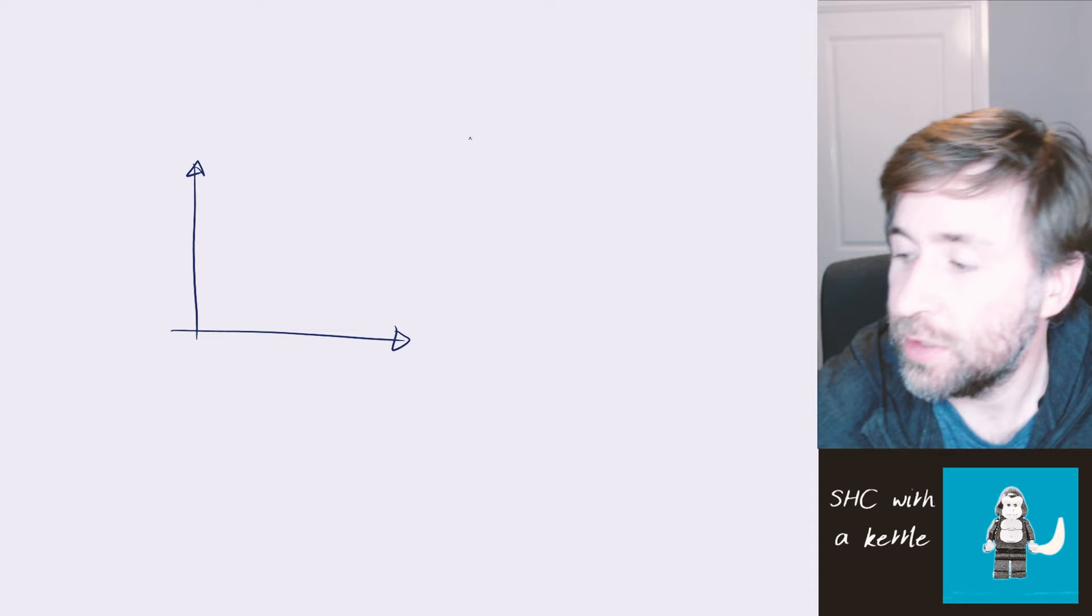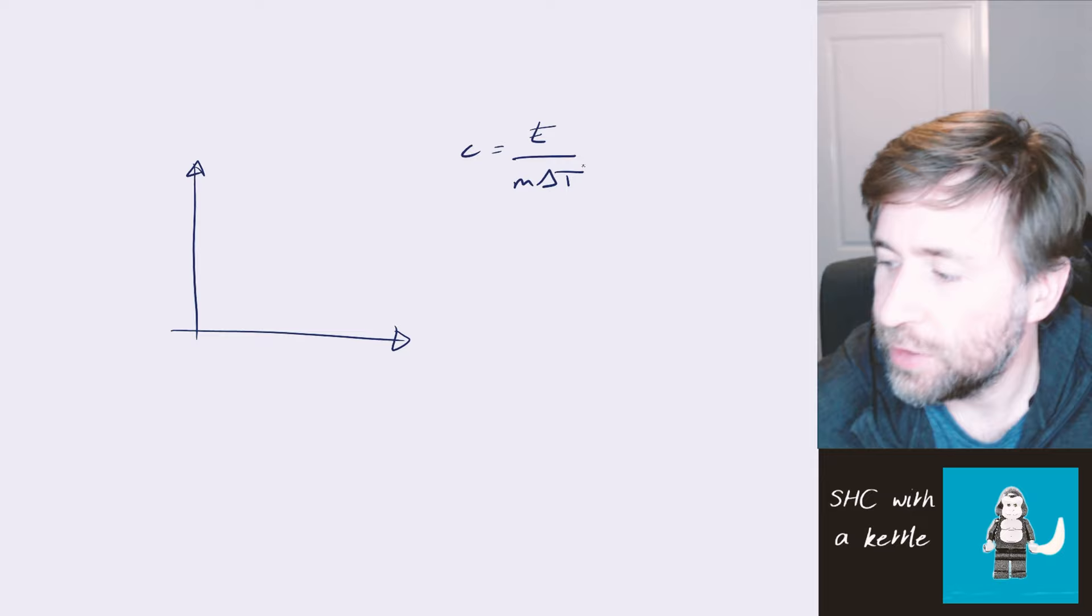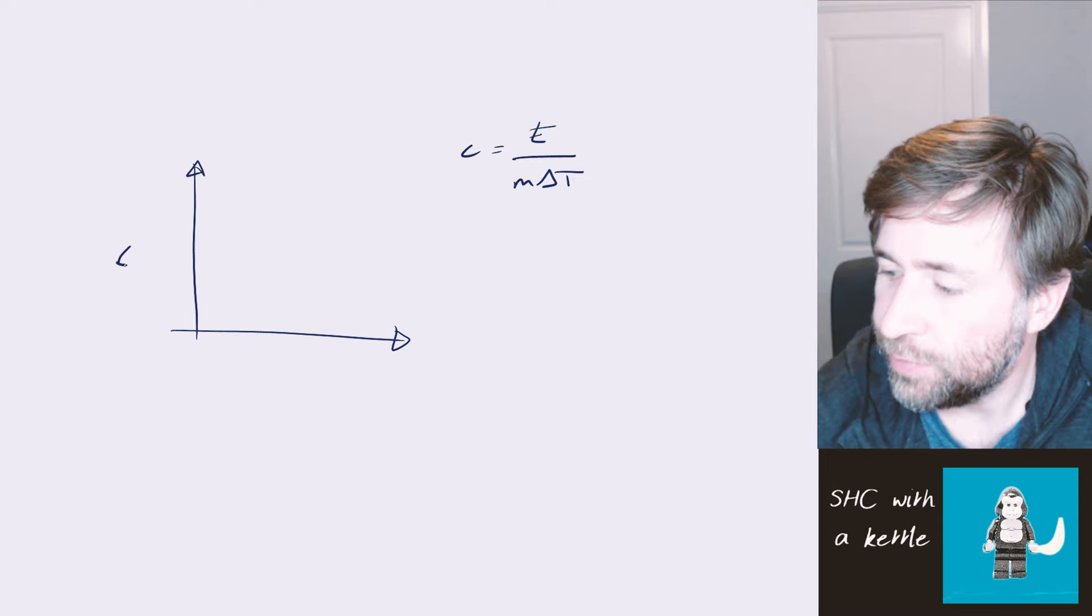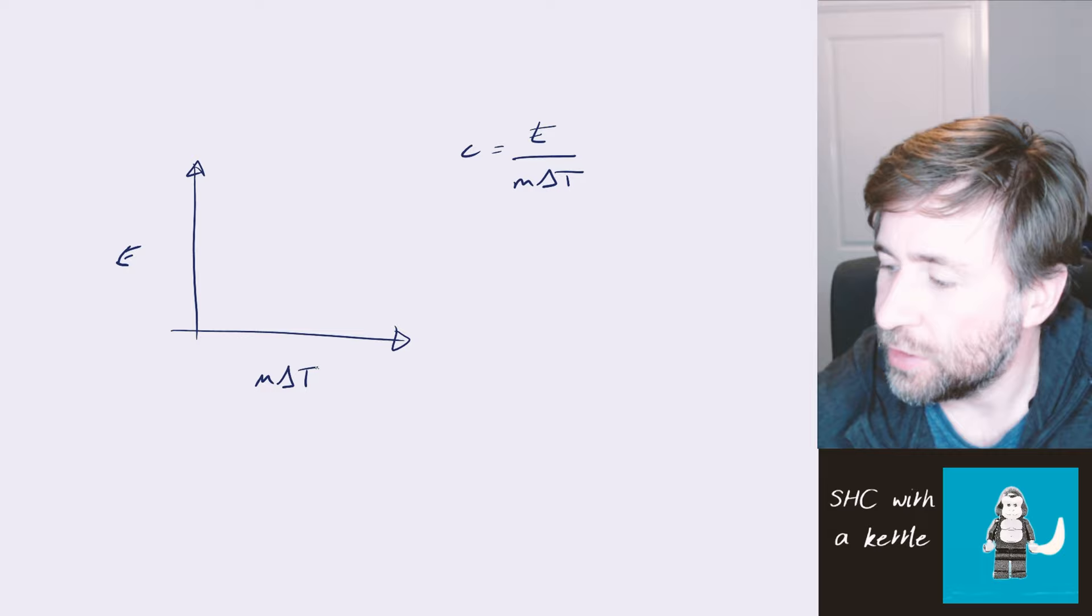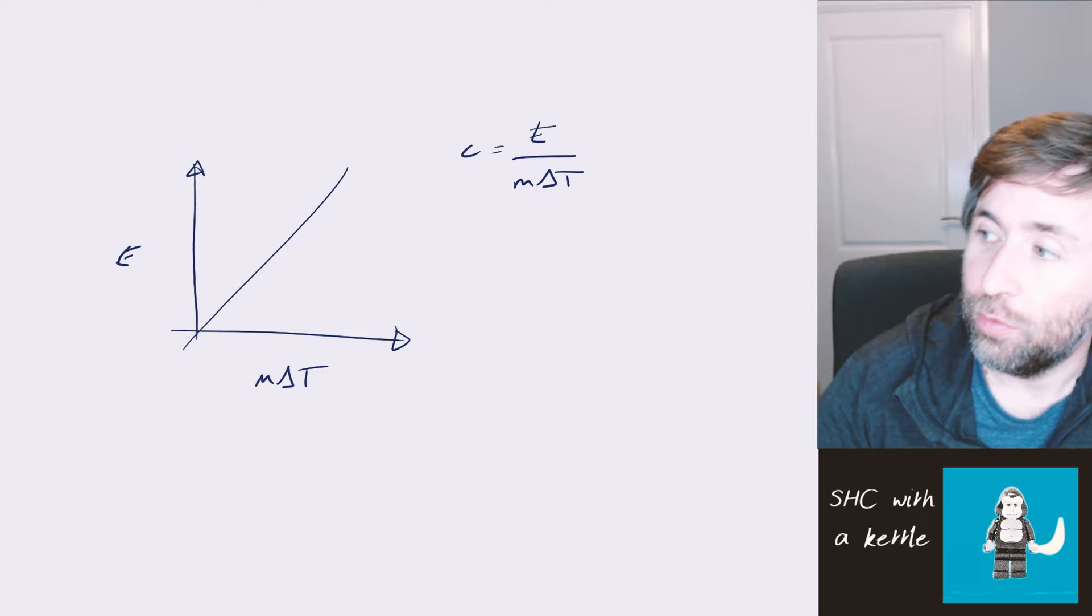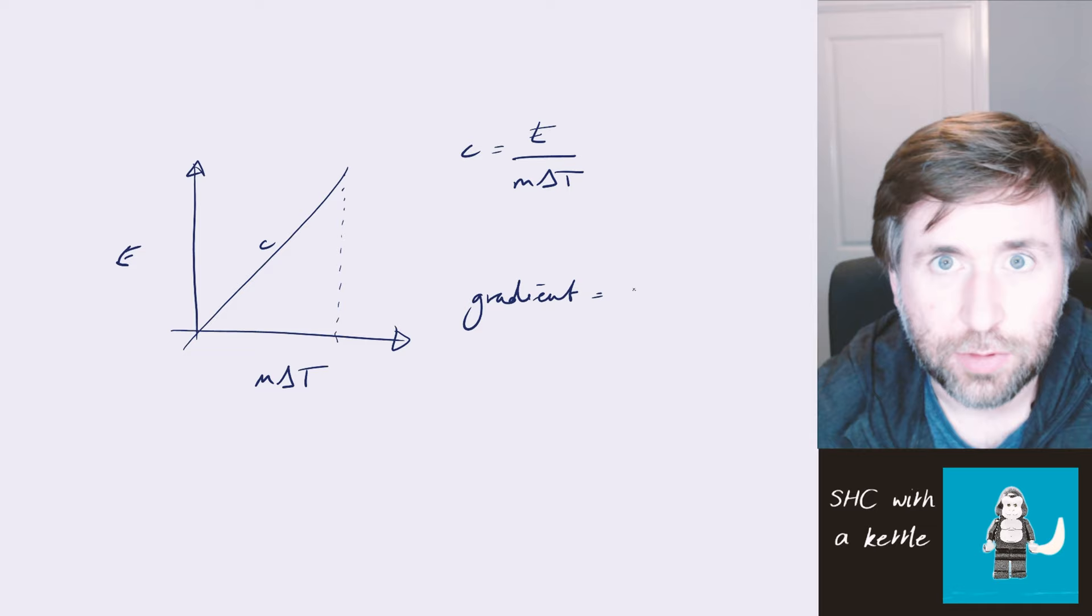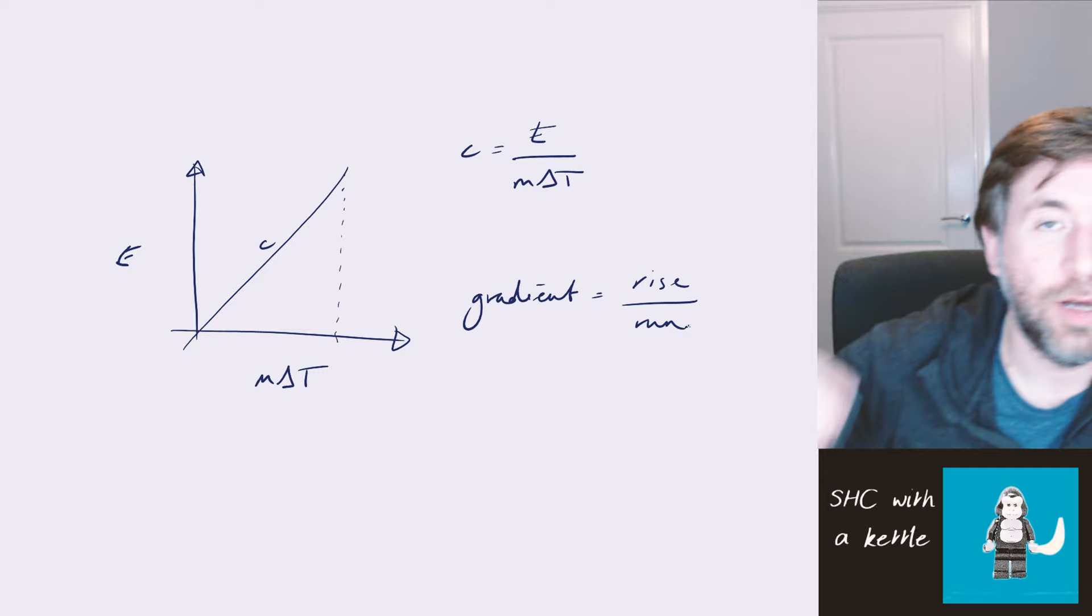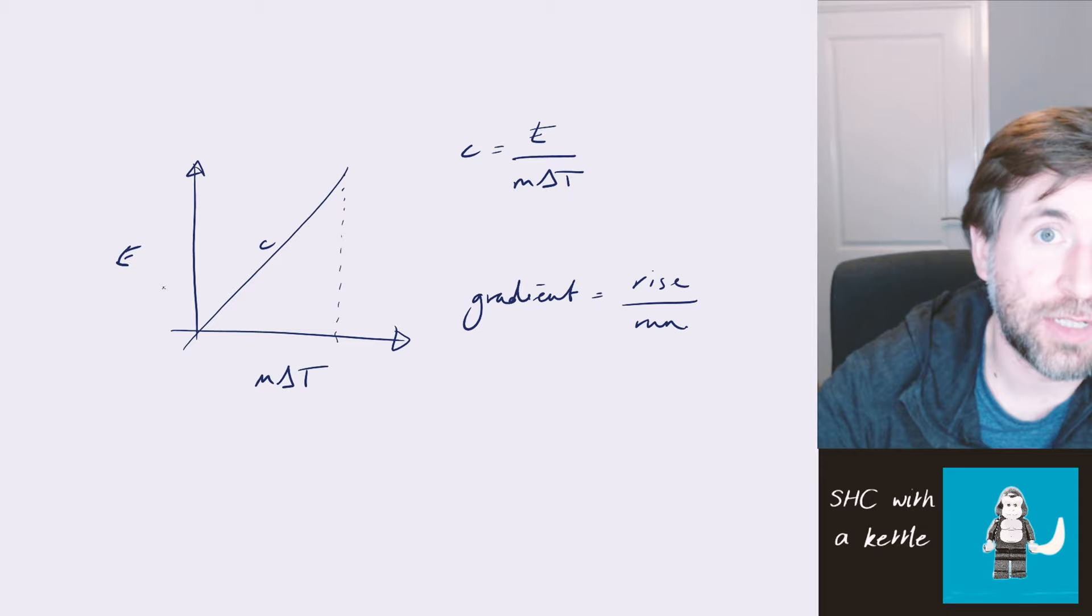Our equation is specific heat capacity is the energy supplied over the mass times the temperature change. Now that's our equation for specific heat capacity. And what we're going to do then is we're going to plot energy, energy supplied on the y-axis and mass times temperature change on the x-axis. Now what that means is that we should get a line going through the origin with a gradient of the specific heat capacity. Our gradient is the rise over the run. And that's what all gradients are. How steep is the line? How far up does it go compared to how far across it goes? So in this case, our gradient, our rise over the run is E over m delta T, and that's the same as our equation for specific heat capacity.